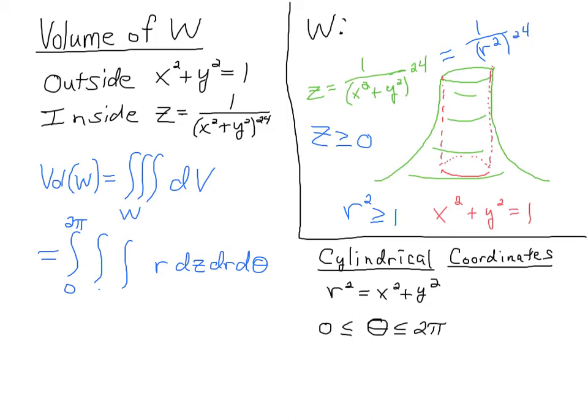And then we know that z will be greater than 0, because this surface will never be below 0. So z is greater than 0, so that will give us a lower limit for integration. And then I'm going to substitute x squared plus y squared to be r squared. So we're going to end up with a 1 over r to the 48th power.